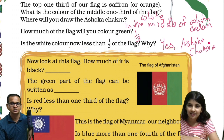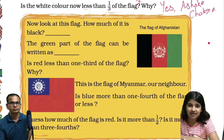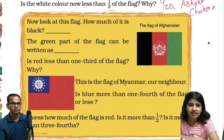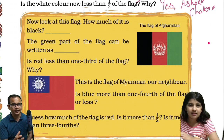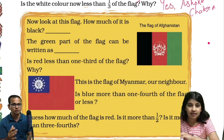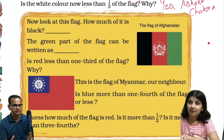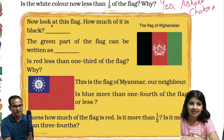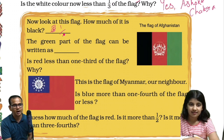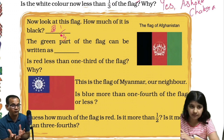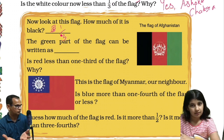Shall we go next? Yes. Now look at this flag. How much of it is black? — One by three. Correct. It is one by three, one third. One by four we call one fourth, and one by three we also call one third — no problem.